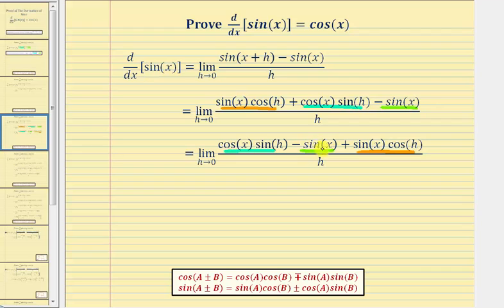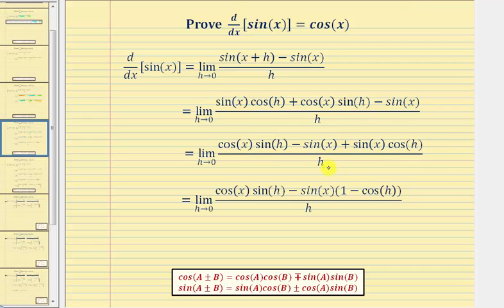Notice how these two terms in the numerator share a common factor of sine. So now we're going to factor out negative sine x from these two terms — we won't factor the first term. When we do this, factoring negative sine x from sine x leaves positive one, and factoring negative sine x from positive sine x cosine h leaves minus cosine h.